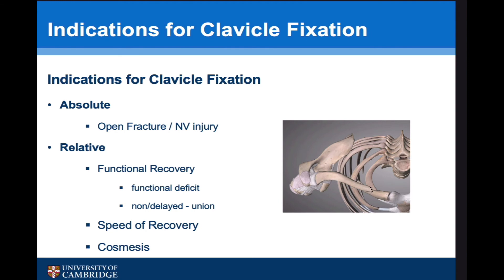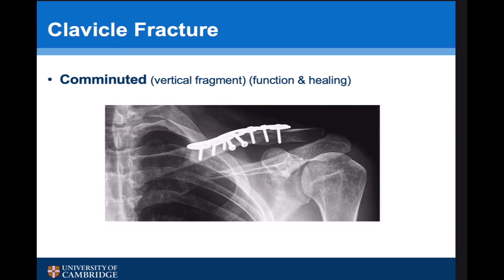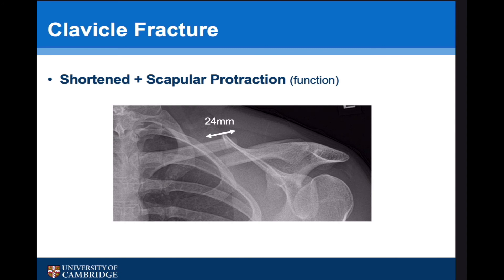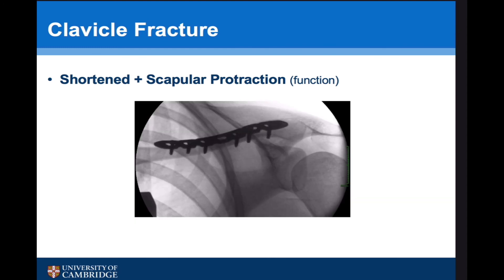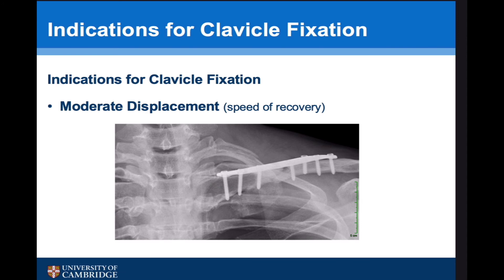A third and less common reason for fixation is cosmesis. Here is an example of a patient with a comminuted fracture with a vertical fragment who had issues with scapulothoracic function, and the prognostic indicator suggested a very high chance of non-union. After fixation, almost straight away they were feeling a lot better. A lot of these patients are similar to the case in the second talk — they complain of scapular problems and pain in addition to their clavicle symptoms. Here is another example of a patient with shortening and scapular protraction — 24 millimeters on X-ray — and this is it reduced. This final example shows moderate displacement in a jockey; we fixed this and they were back riding within a couple of weeks.